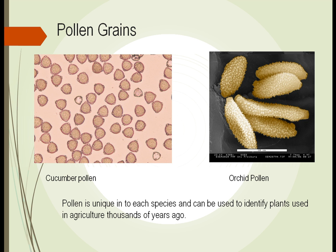Another way is to look at pollen grains, seen here at huge magnification. We look in the spring and fall — the trees, bushes, and plants all have pollen. Pollen is part of the sexual reproduction of plants, and plants try to disseminate it as far as possible. Pollen grains are very long-lasting, and each pollen is a little different — for example, cucumber pollen versus orchid pollen. It is unique to each species and allows us to identify what plants were in a particular area at what time.